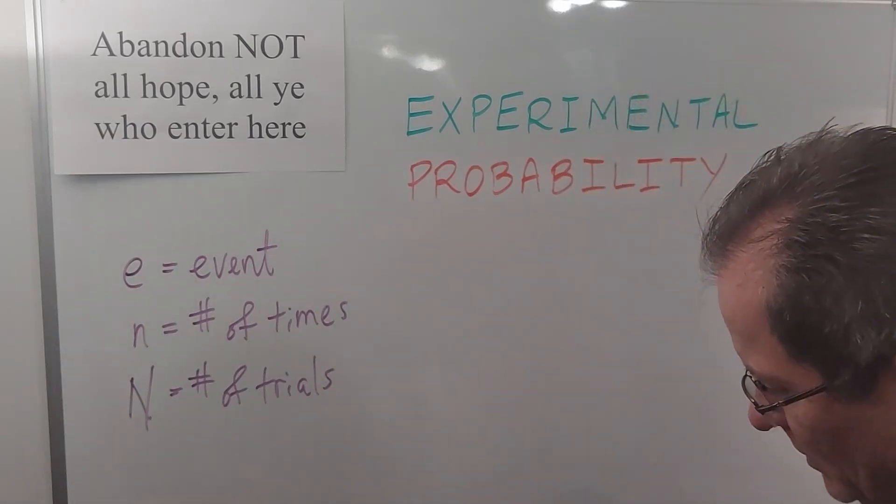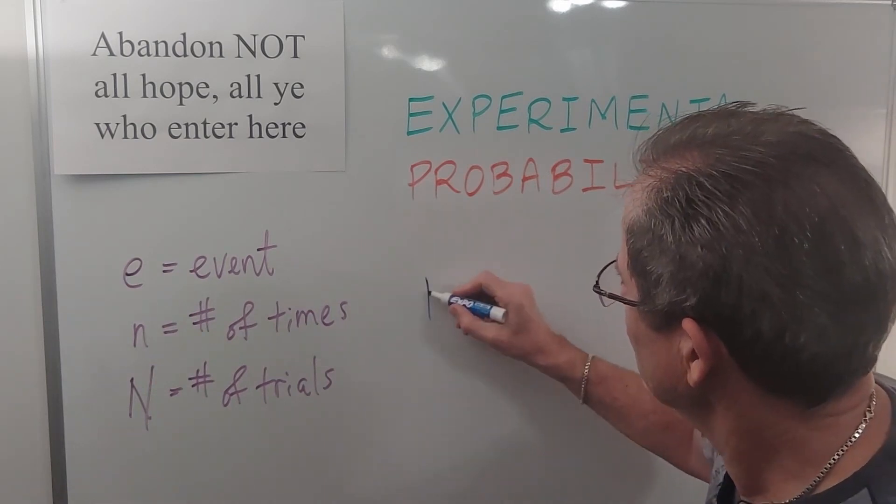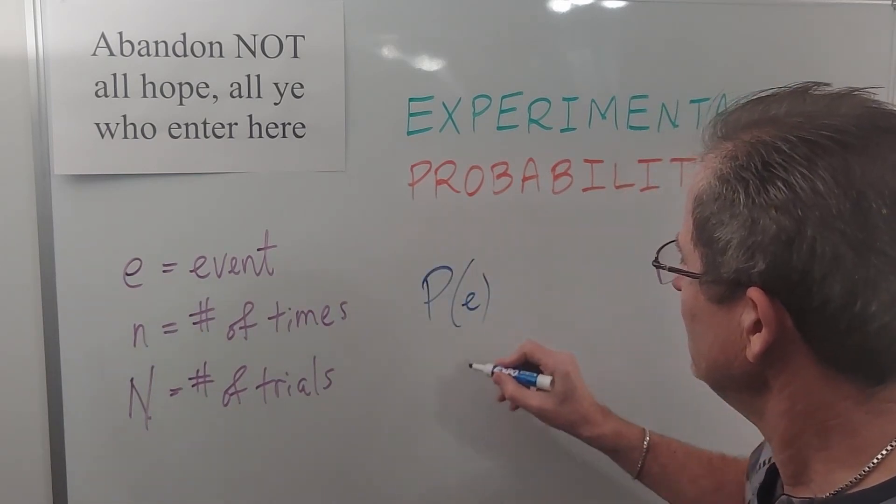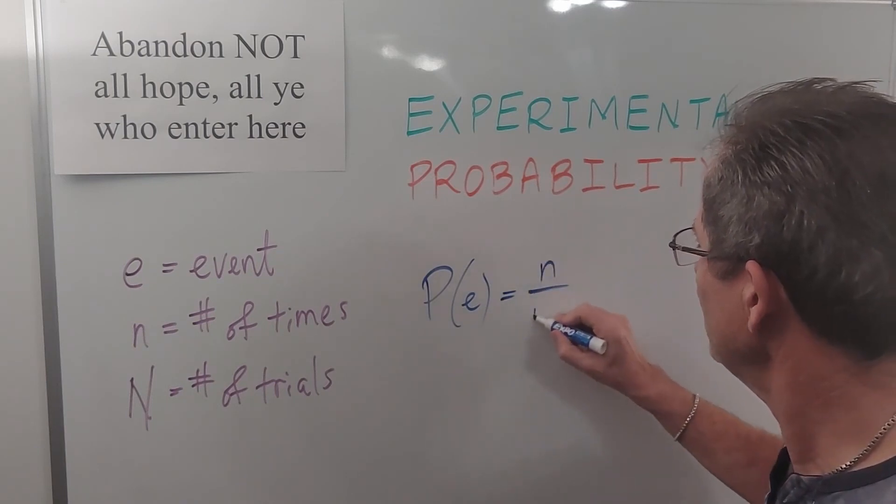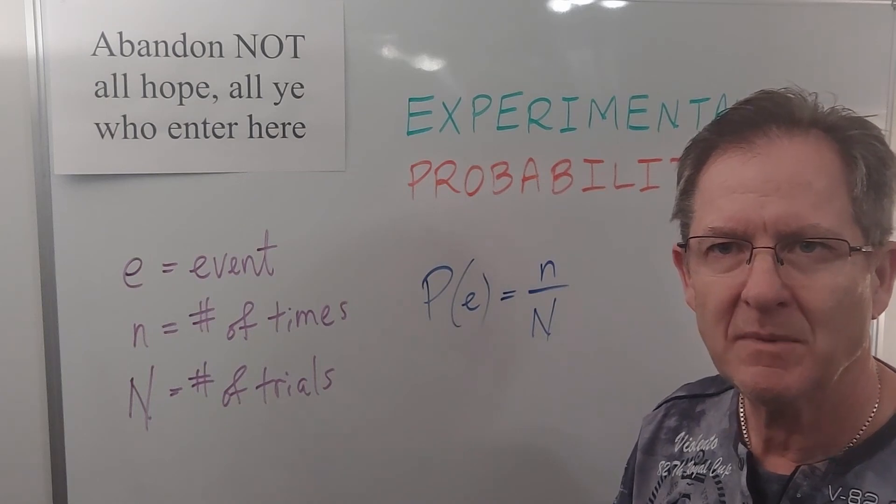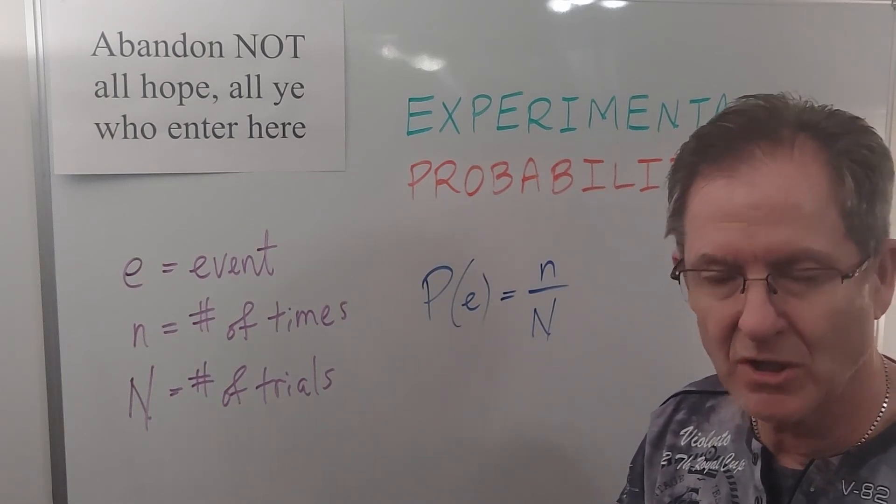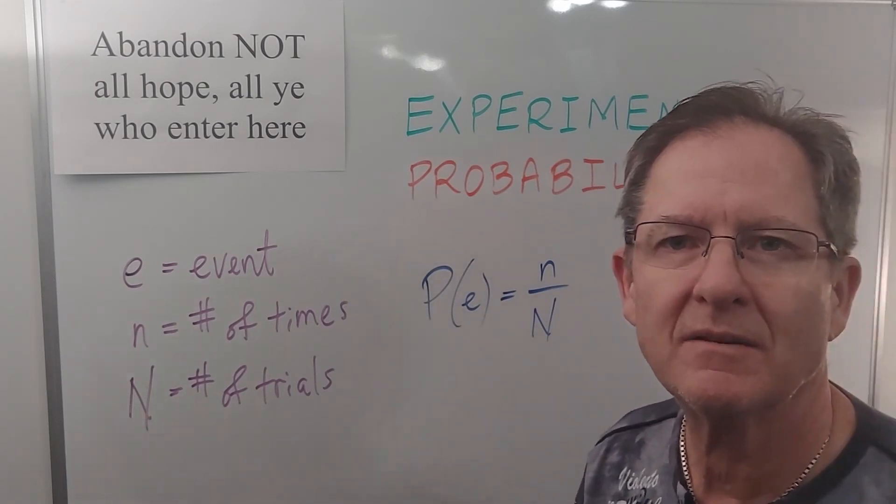So by definition the probability of event E occurring is little n divided by capital N. It's as simple as that. That's what actually happened. Doesn't mean that's what should have happened. That's just what happened. Okay that's a good little start.